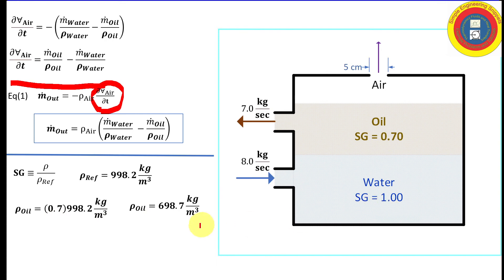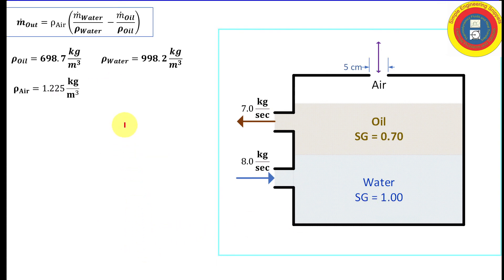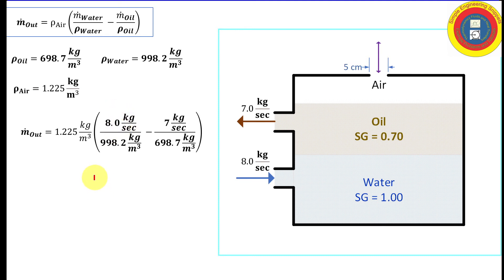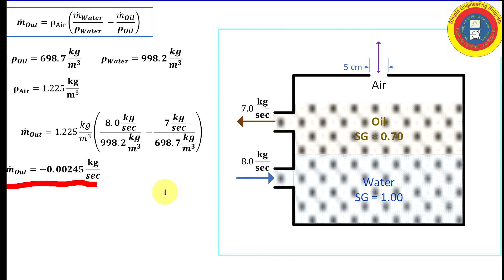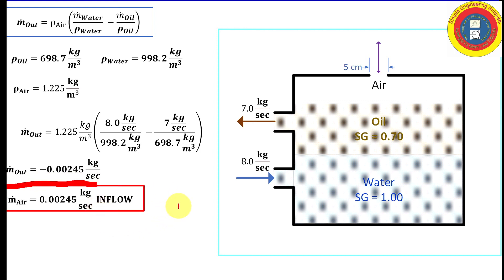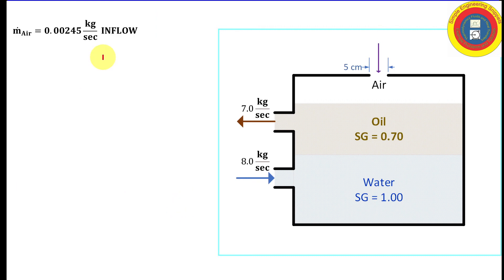Now we have everything needed. Plugging in the numbers and units — using SI, everything comes out cleanly — we get a mass flow rate of air out equal to −0.00245 kg/s. Since the answer is negative, this is actually an inflow, not an outflow. That is our final answer. We should also check whether the air flow can reasonably be assumed incompressible.